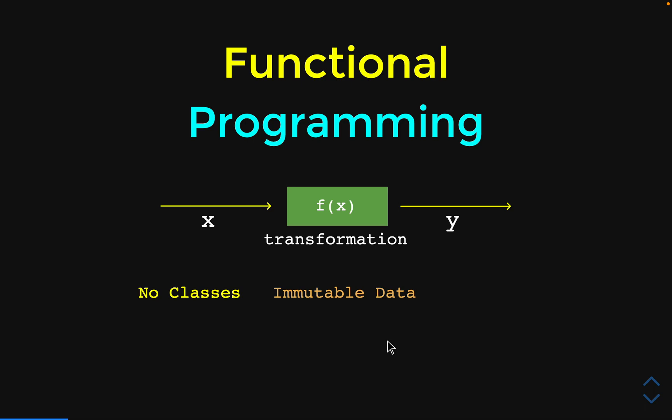Now this brings me to the next point, and I think that this point is going to shock a couple of us, and that means we don't have any for loops. Now since the data is immutable, that's why we don't have for loops.